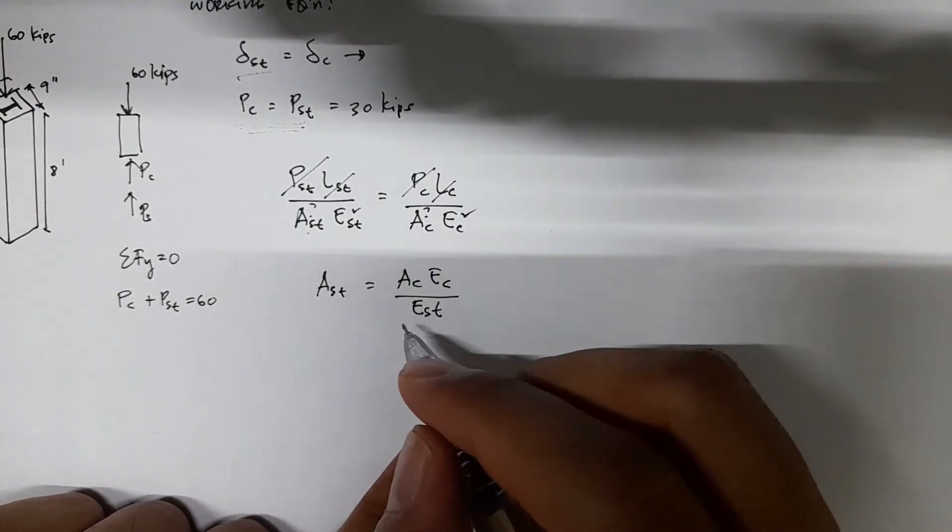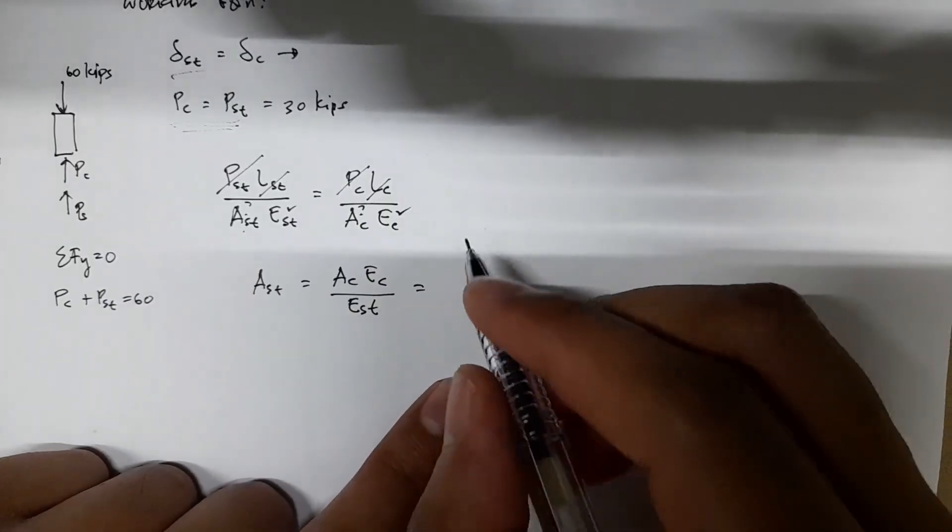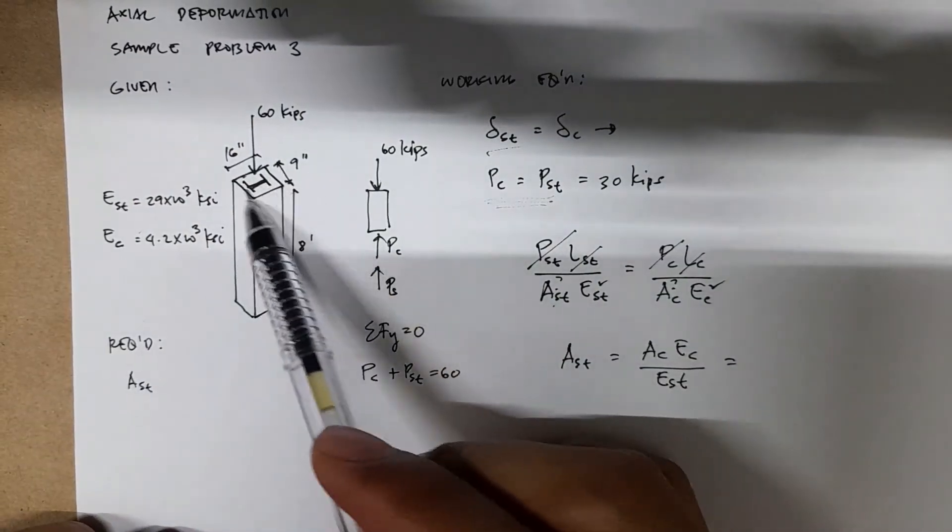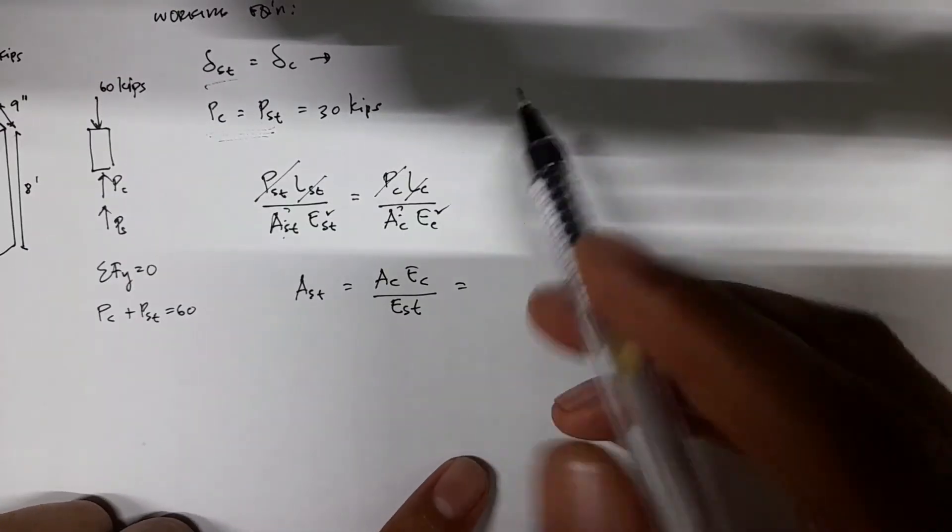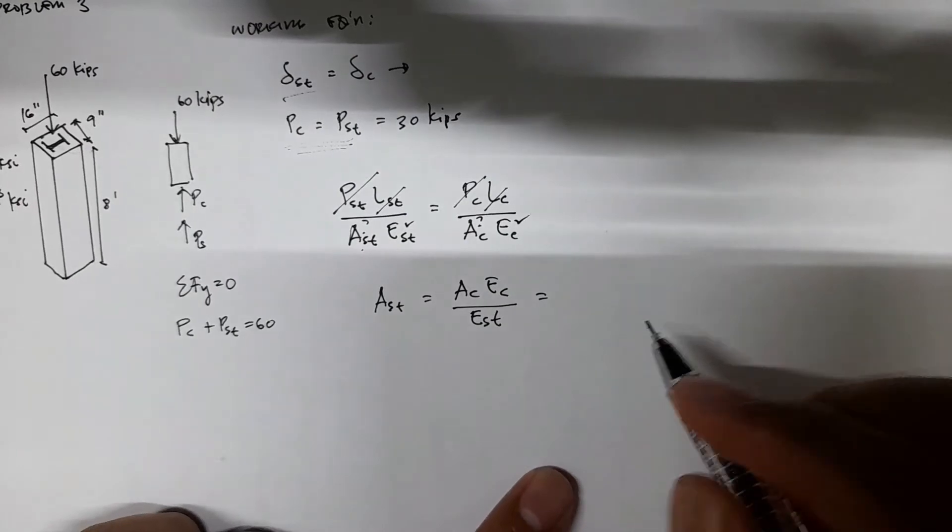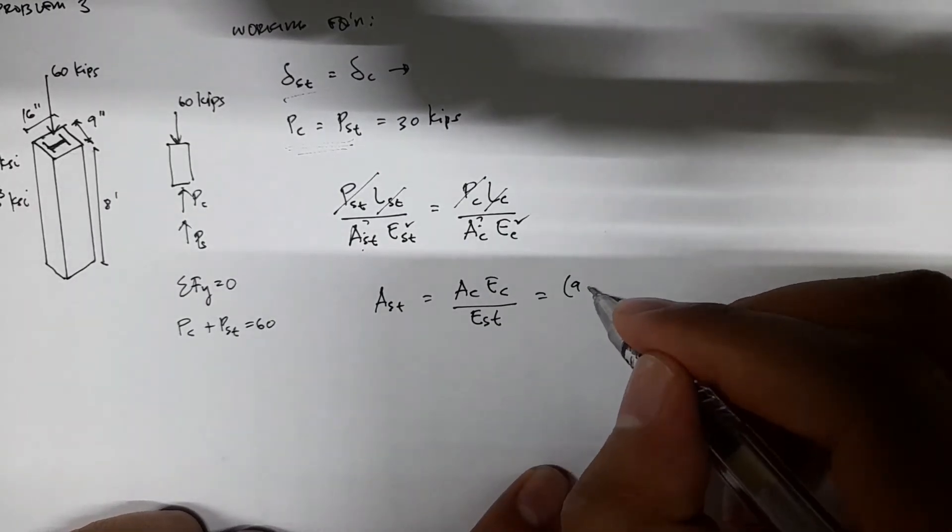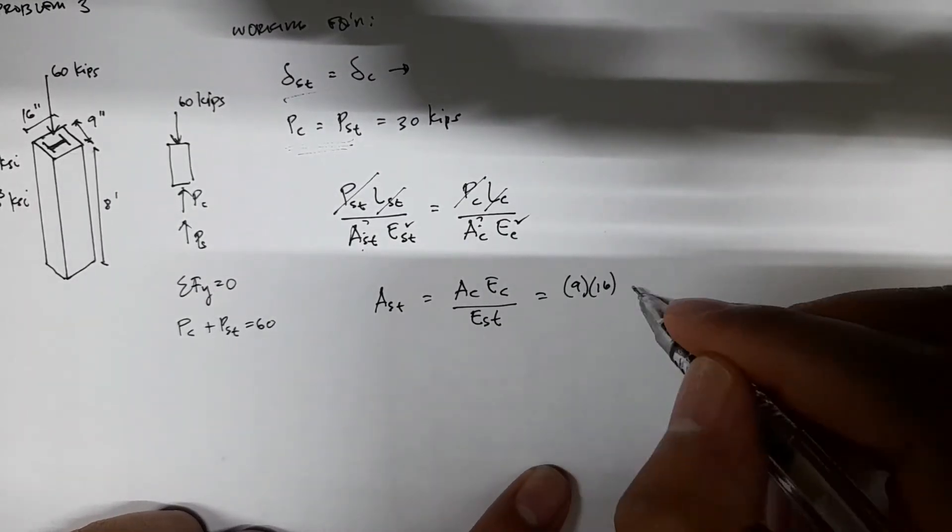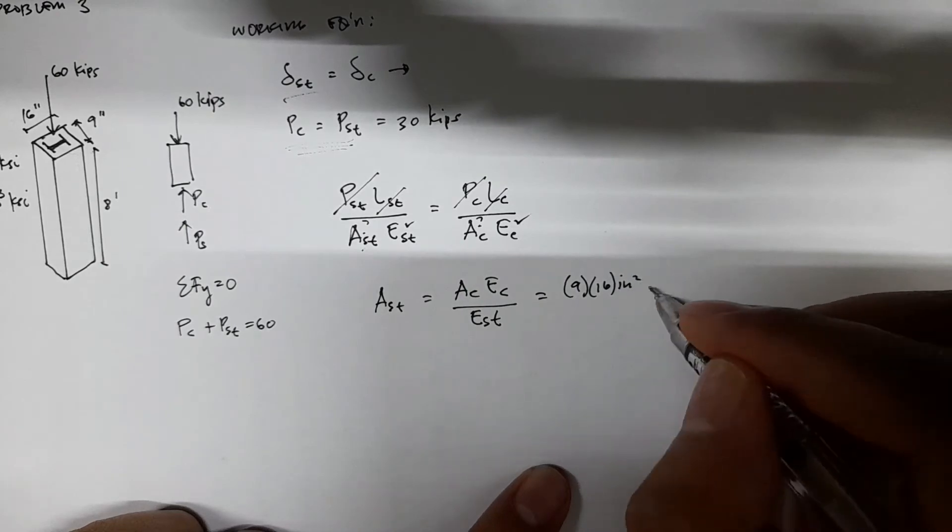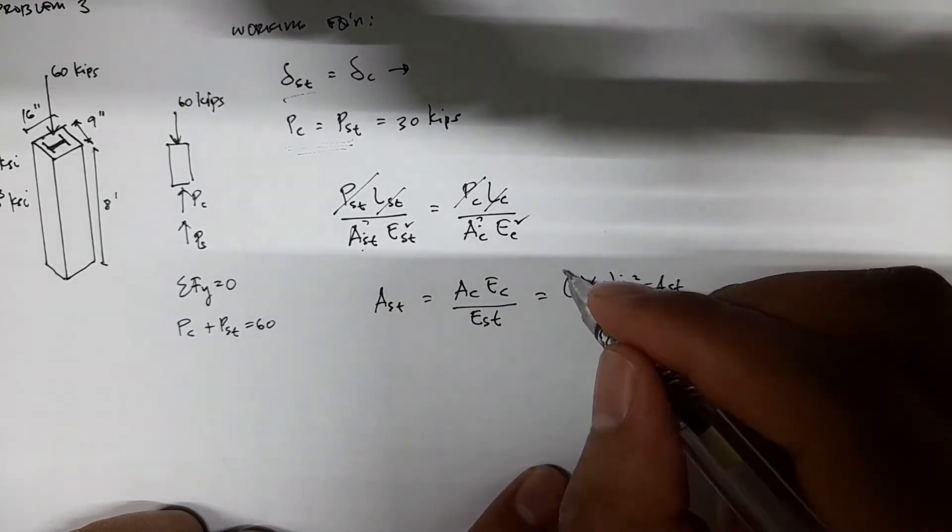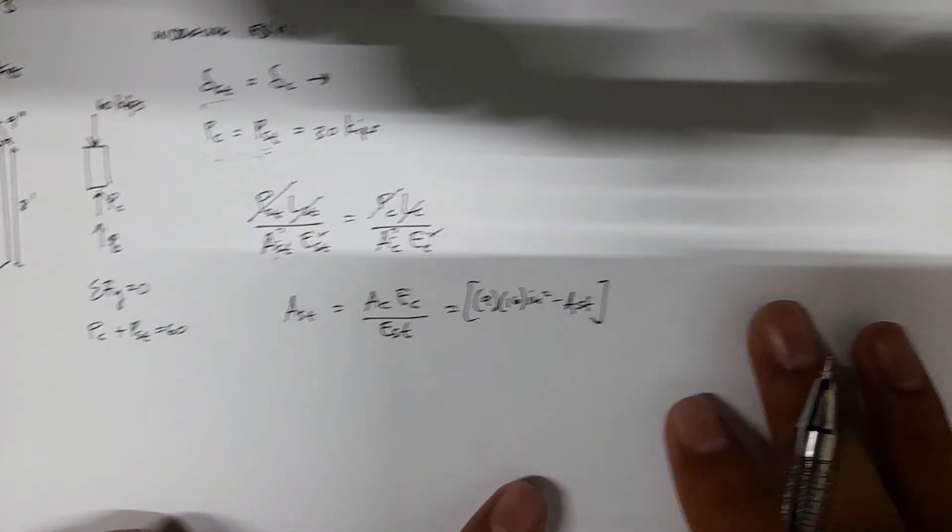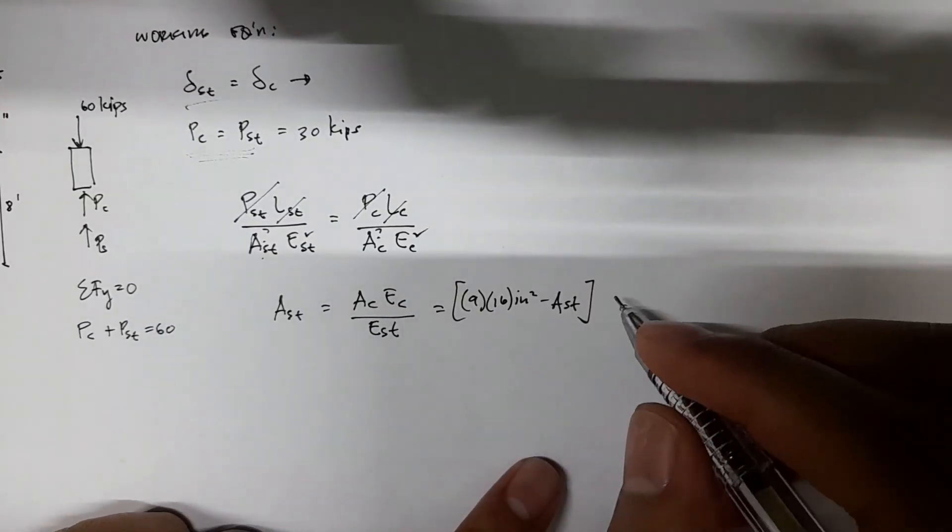You know that Ac is the total cross-sectional area minus the area of steel. So we have 9 times 16 inches squared minus Ast. This is the area for concrete, and then you have the Ec which is given.